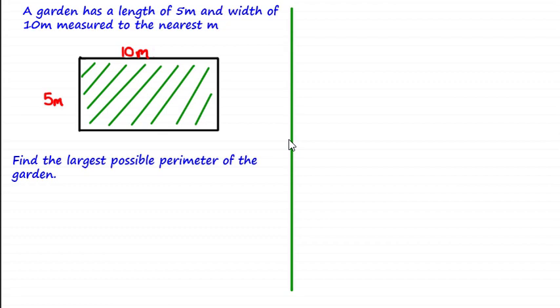Let's go straight into the first question. A garden has a length of five meters and a width of 10 meters, measured to the nearest meter. Find the largest possible perimeter of the garden. I'm going to give you a few moments to pause the video and have a go at this question, and when you come back I'll show you the worked solutions.